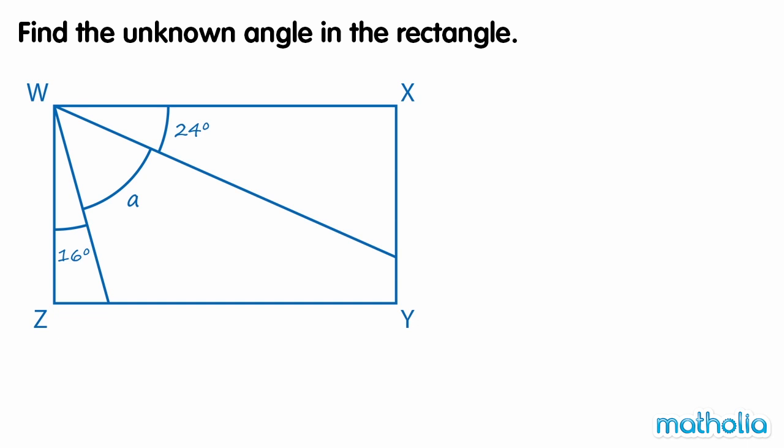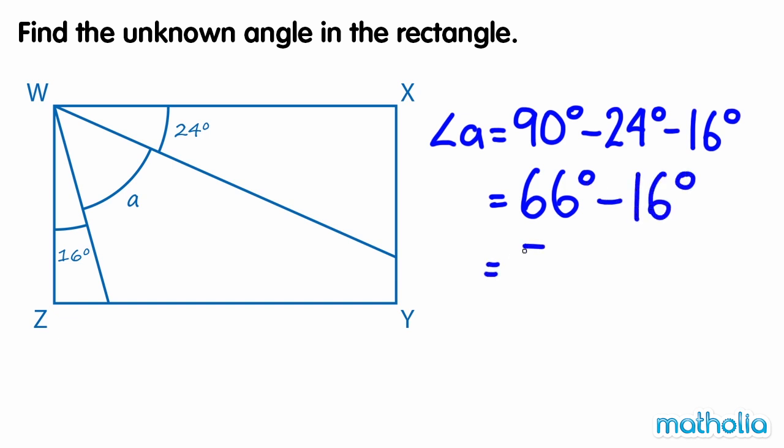Find the unknown angle in the rectangle. We know that angle ZWX is a right angle, which is 90 degrees. So angle A is equal to 90 degrees minus 24 degrees minus 16 degrees. 90 degrees minus 24 degrees equals 66 degrees. 66 degrees minus 16 degrees equals 50 degrees. So the unknown angle, angle A, is 50 degrees.